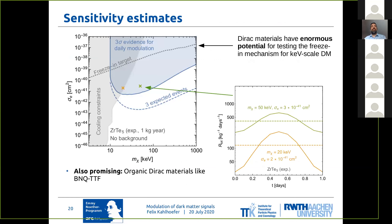We've worked out some sensitivity estimates for this material and others, for example organic Dirac materials. What you can see here for two benchmark points is indeed that you get these very large daily modulations potentially, and also that you can achieve sensitivity to very interesting parameter regions. With these Dirac materials, you can potentially test dark matter particles down to something like 10 keV based on just energetic arguments. And the region shaded here is where you could hope to see three-sigma evidence for daily modulation.